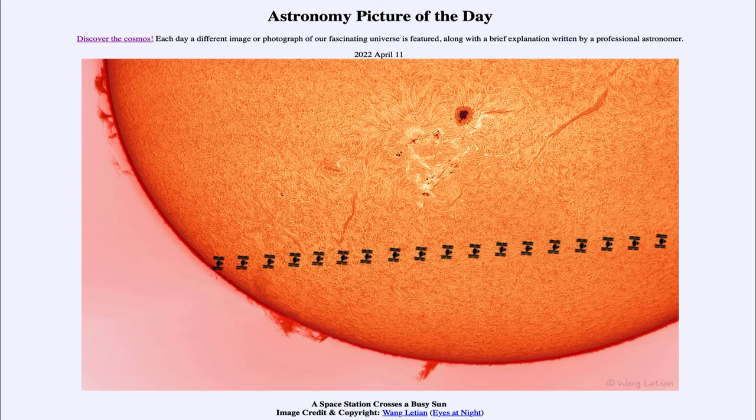And here in this image, it's actually several images put together—multiple images of the space station that were taken and separate images of the sun to show all of the detail.